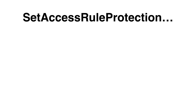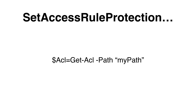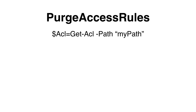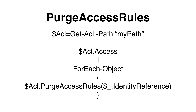Here is an example of removing the inheritance from a directory. First, we use Get-ACL to create an ACL variable. Then we use the SetAccessRuleProtection method on that ACL variable, setting IsProtected to true and PreserveInheritance to false. To remove ACEs that are not inherited, we can use the PurgeAccessRule method. We first create an ACL variable using Get-ACL with the path of the file or folder, then pipe the access method on the ACL variable to a ForEach-Object loop, purging every access list entry by specifying the identity from the pipeline variable.